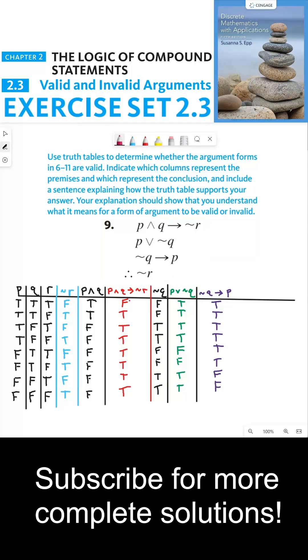So for example, on the red column, the first line is false, meaning that our assumption isn't even true. So automatically, the form of argument for this entire series of statements would be true simply because the premise is already false.